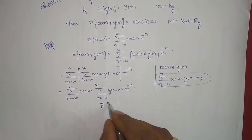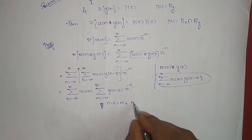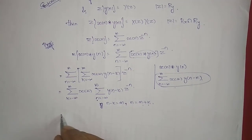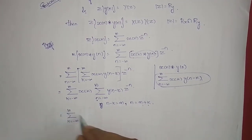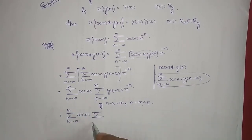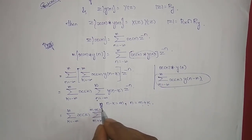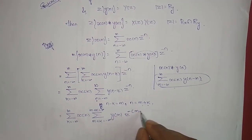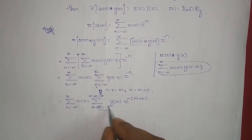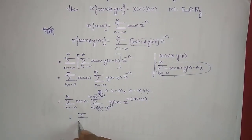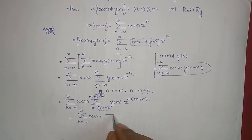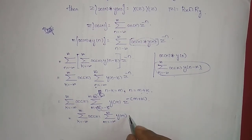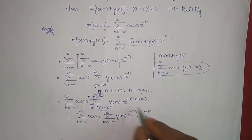Now I am going to replace n minus k with m, so n is equal to m plus k. Instead of writing n I will write m plus k, and instead of n minus k I write m. This gives summation k from minus infinity to infinity of x of k, summation m from minus infinity to infinity, of y of m times z power minus m times z power minus k. I split this term and take z power minus k to the other side.